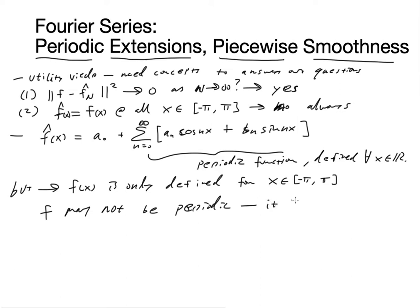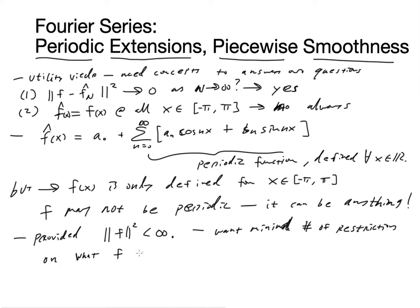In fact, it could be anything it wants. It can be anything. The whole point of function approximation and function representation is that we should have f be as wide a class of functions as possible, provided that the magnitude of f, we actually have a square integrable function. We need something that's at least definable, but we don't want to have too many restrictions on f.